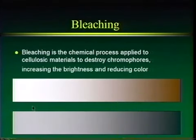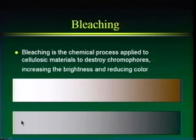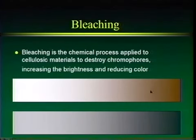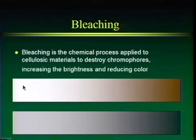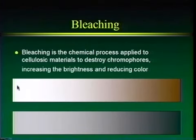To illustrate: things appear dark or black because light is absorbed by chromophores. Where chromophores are absent, most of the light hitting that area is reflected, and we see something as white and bright. So bleaching is used to decrease color and increase brightness.